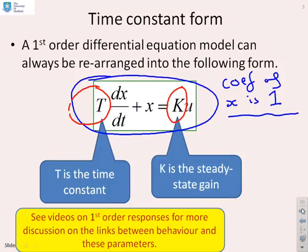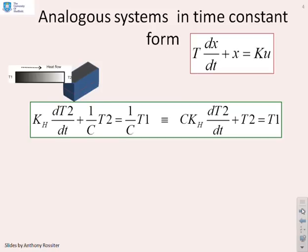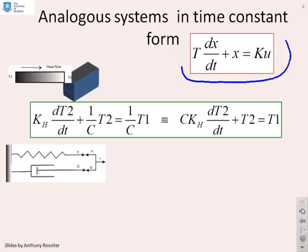If you look at the videos on first-order responses, you will see a bit more discussion on exactly how T and K affect the behaviours of the corresponding system. Let's look then at some of the systems that we've derived earlier in this set of videos. What we're going to do is look at how we can take those models and put them in this desired time constant form: T·dx/dt plus x equals K·u.